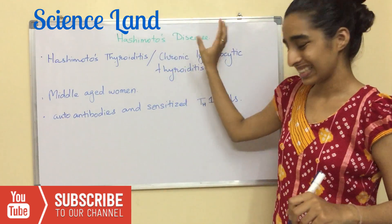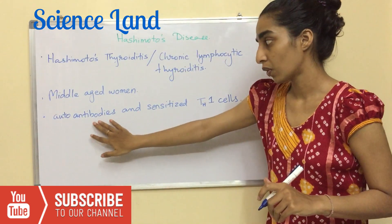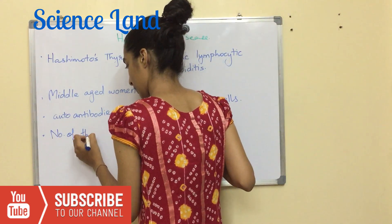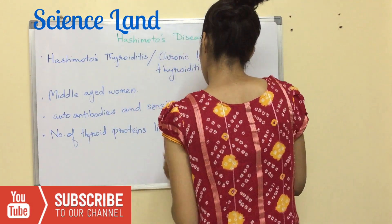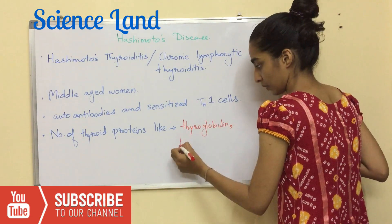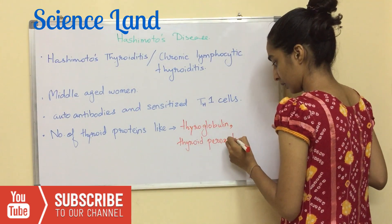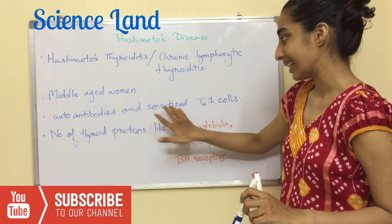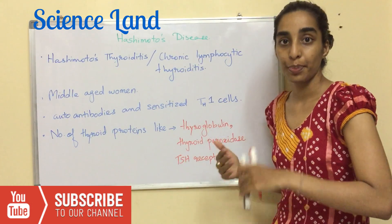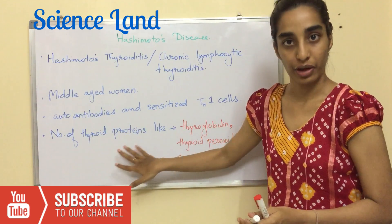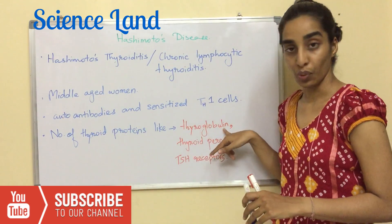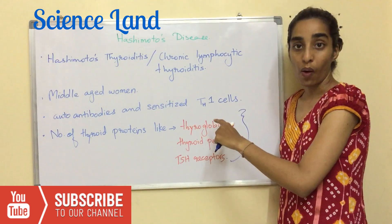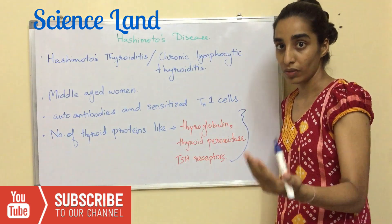In Hashimoto's disease, a person produces auto-antibodies and sensitized TH1 cells. These auto-antibodies and sensitized TH1 cells are produced against a number of thyroid proteins like thyroglobulin, thyroid peroxidase, and TSH receptors. All these proteins are important for the uptake of iodine.